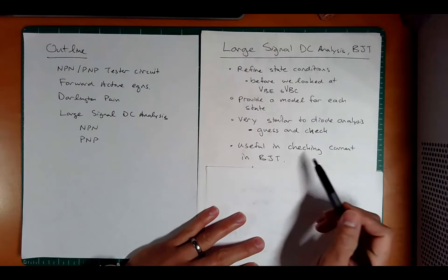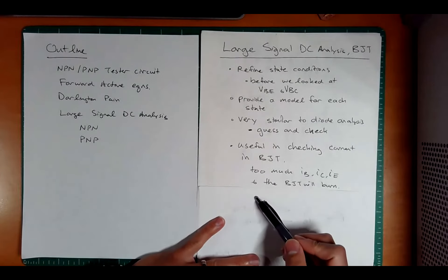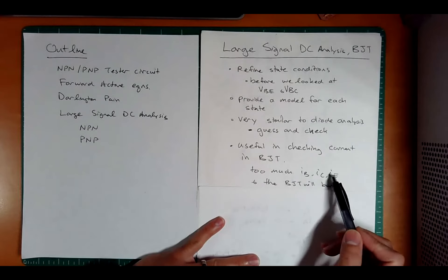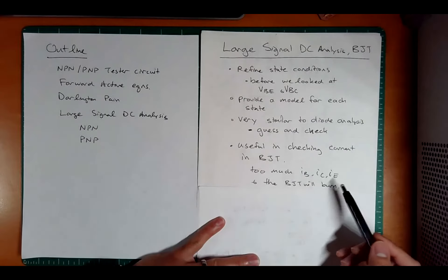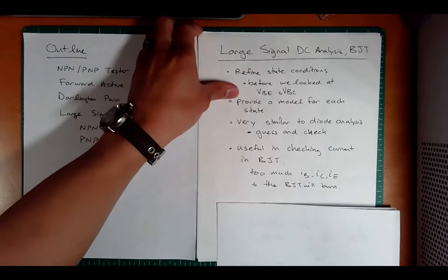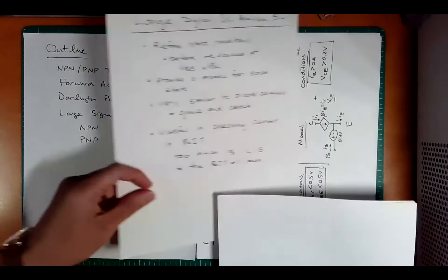One main use of this is to be able to check the current in the bipolar junction transistor to make sure that nothing will burn, right? Because otherwise too much IB, IC, or IE, you're going to get something to burn. And then you can also check will your external circuitry burn. We want to make sure we're under those maximum limits.